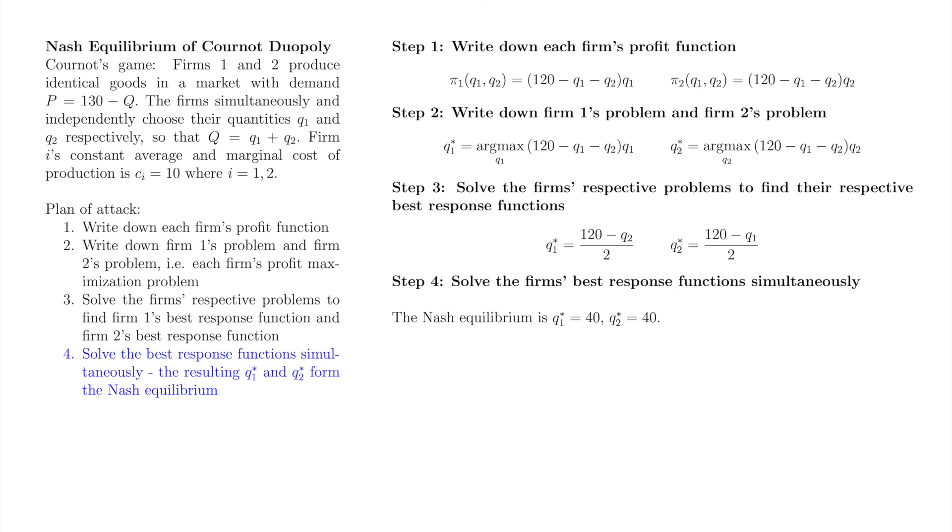Cournot, after deriving conditions describing the Nash equilibrium quantities, goes on to compare his results to the conditions describing the output of a monopolist in the same market. In our setting, the monopoly quantity is 60.